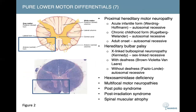Lastly, this slide gives a brief overview of things to consider when seeing patients with purely lower motor neuron signs. There's quite a lot here, including the inheritance patterns of different subtypes of particular diseases. For example, proximal hereditary motor neuropathy has three subtypes based on age of onset: the acute infantile form, the chronic childhood form, and the adult onset form — all three of which are autosomal recessive.